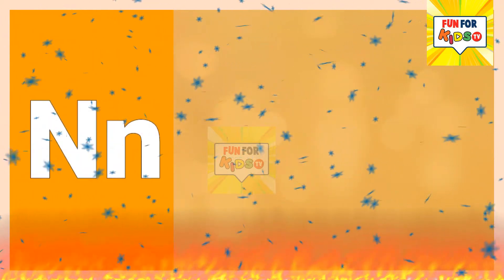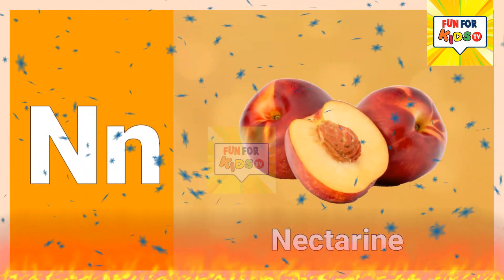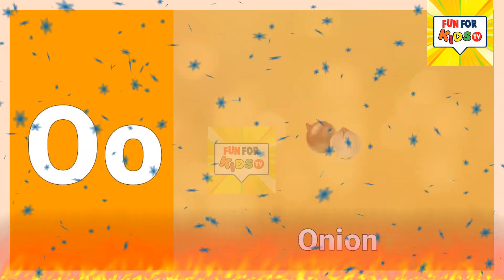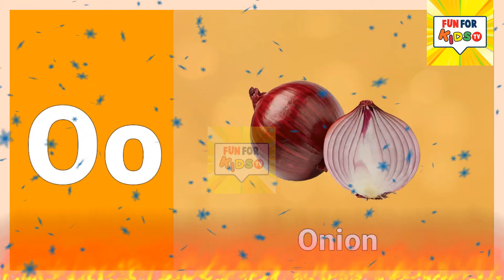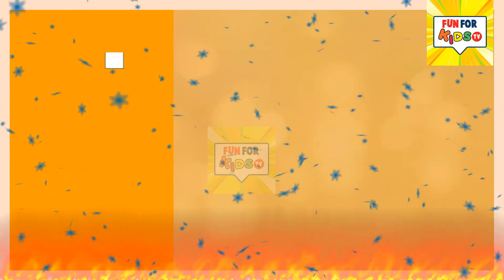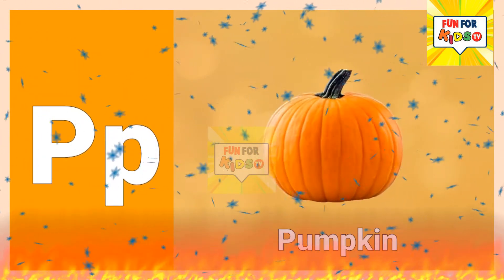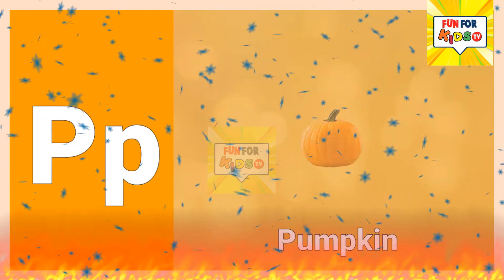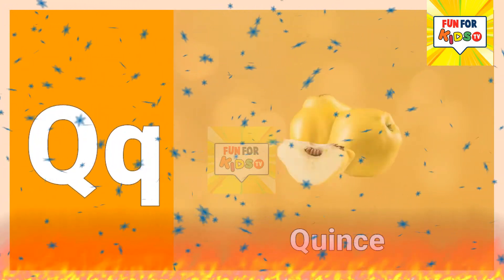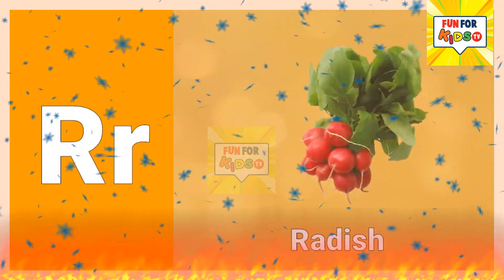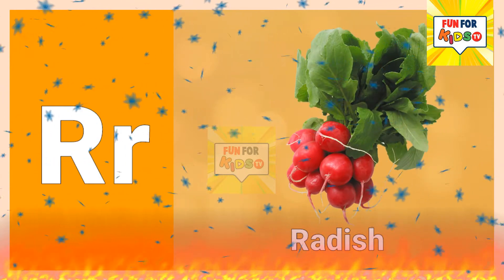N is for nectarine. O is for onion. P is for pumpkin. Q is for quince. R is for radish.